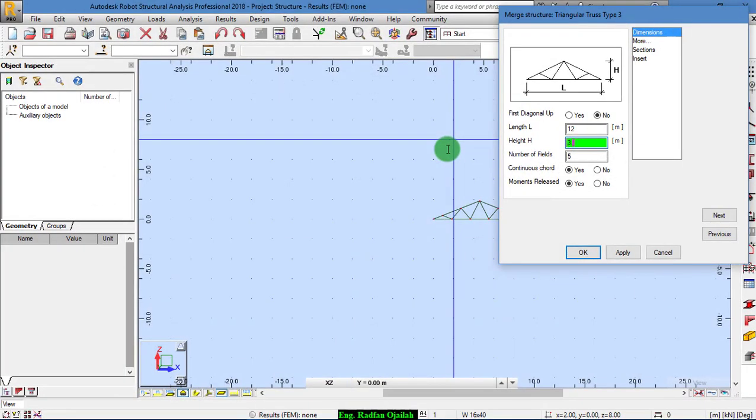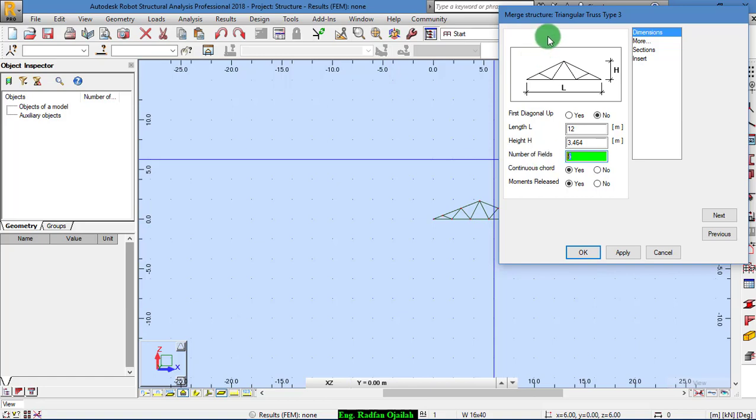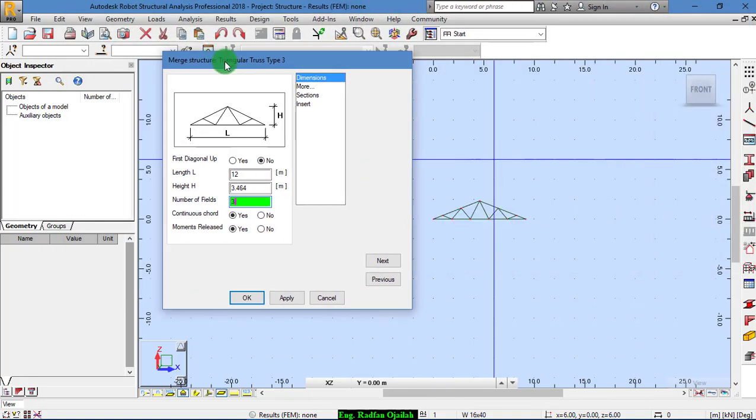We insert 3.464 here. Number of fields I make them as three, that means number of fields in each is six, then click OK.